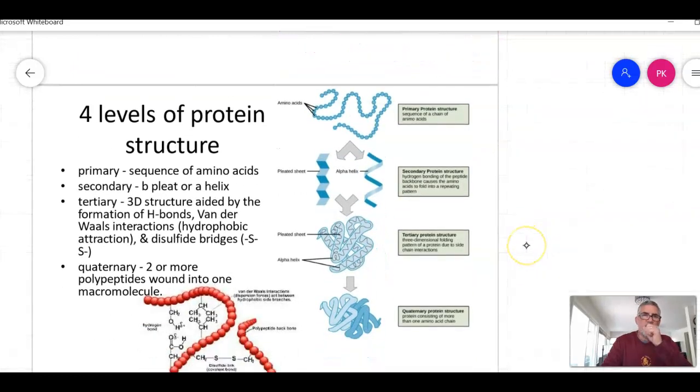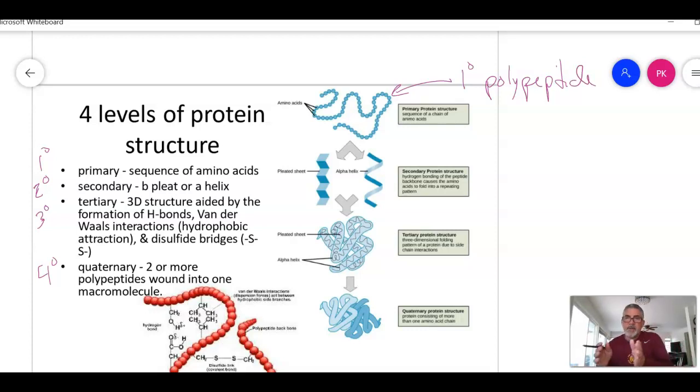So four levels of protein structure: primary, secondary, tertiary, and quaternary. The primary structure is a polypeptide. Remember we said translation doesn't make functional proteins, translation makes polypeptides. So that's a primary structure of amino acids.